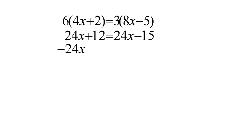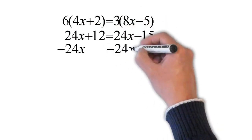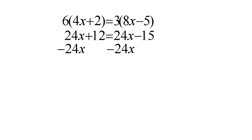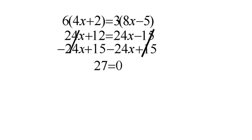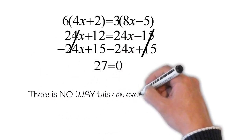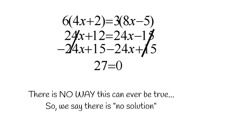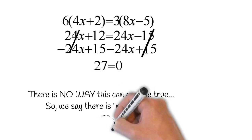Now we need to get rid of 24x from both sides, so we subtract 24x from both sides. We're also going to add 15 to both sides to get all the constants on one side and all the x's on the other. The 24x and minus 24x cancel each other out. 12 plus 15 is 27, and 24x minus 24x is 0. There is no way this can ever be true, so we say there is no solution. If you ever get something that can never be true, we say there is no solution.